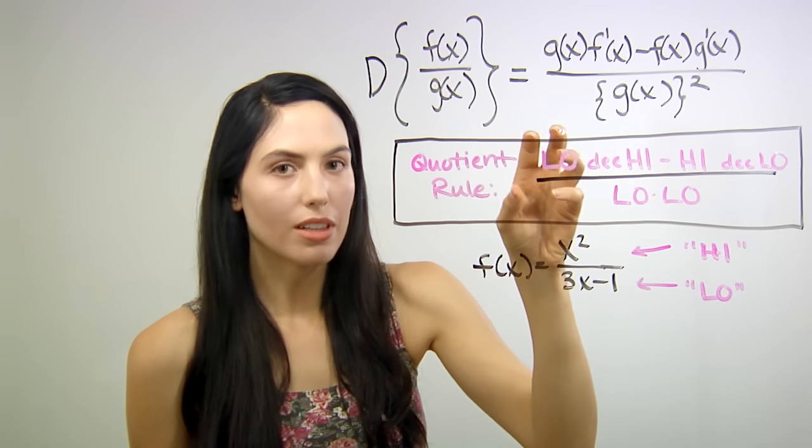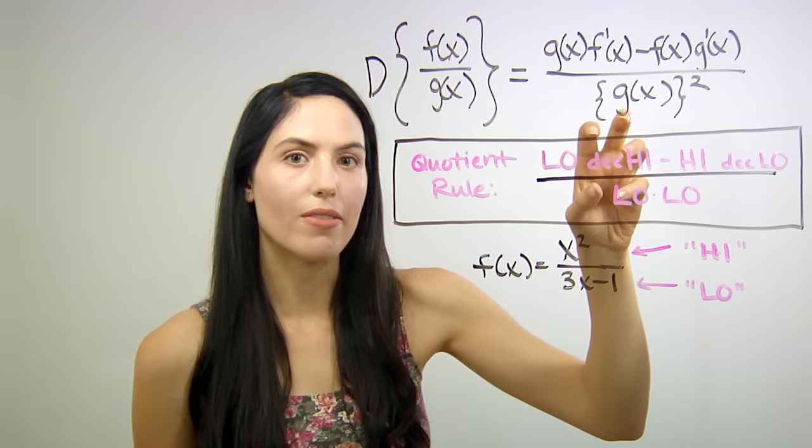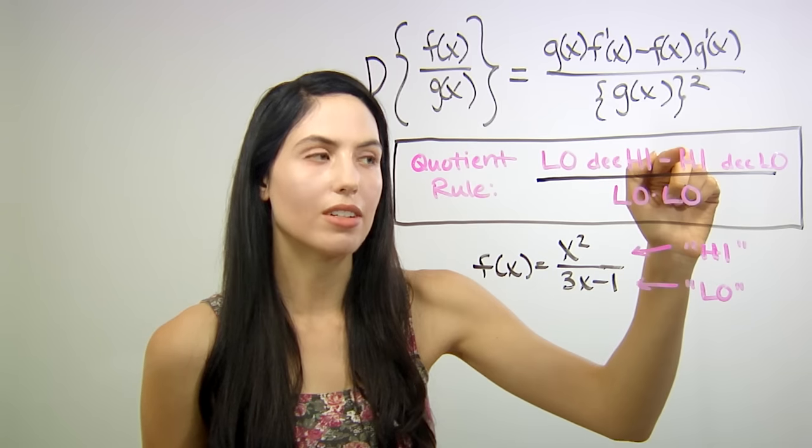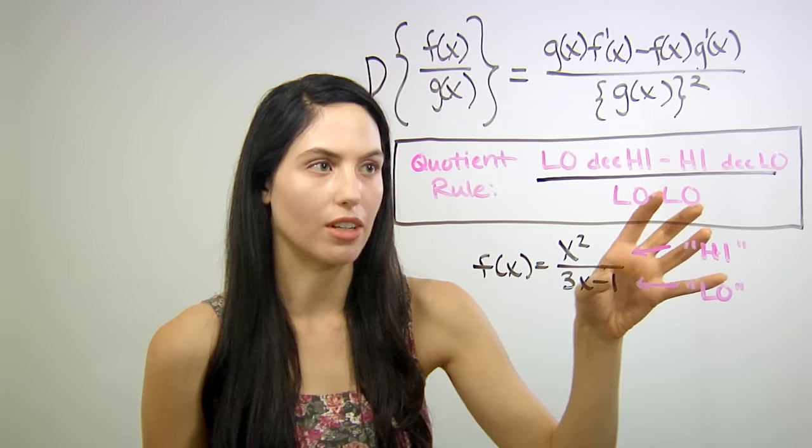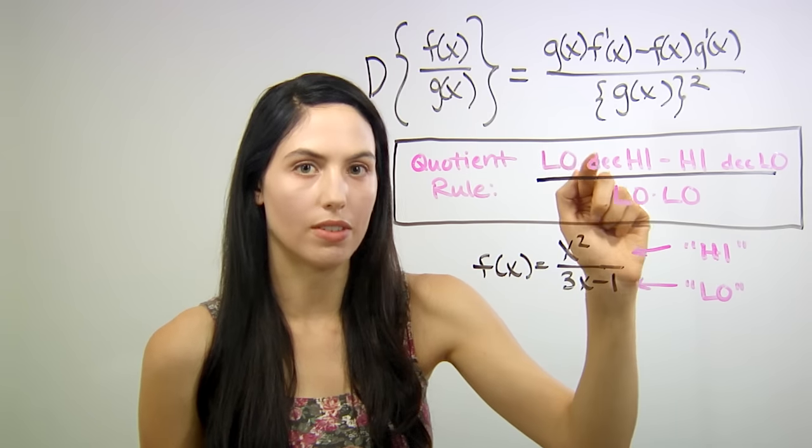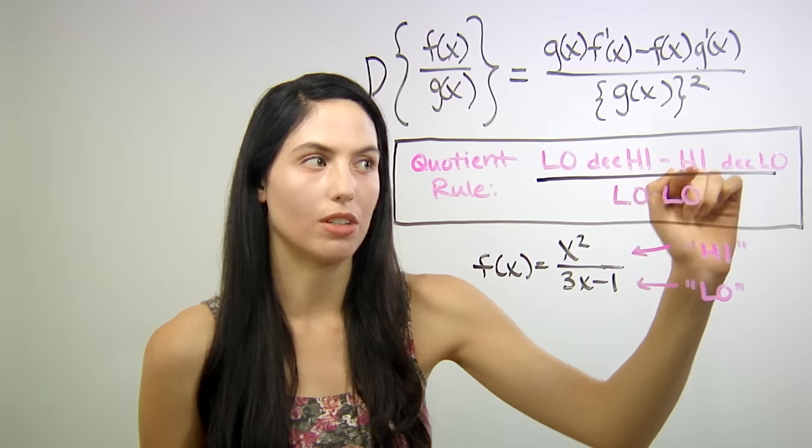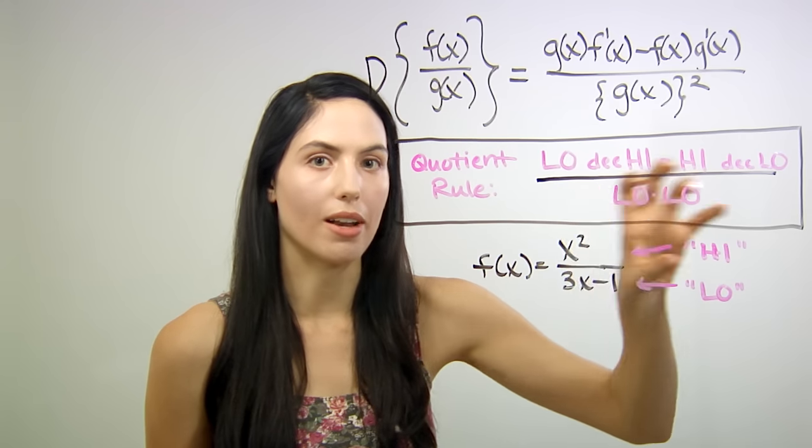So we have low function times derivative of high function minus high function times derivative of low function all over low function times low function. That's just bottom times derivative of top minus top times derivative of bottom all over bottom times bottom.